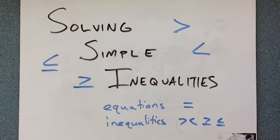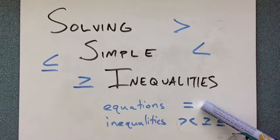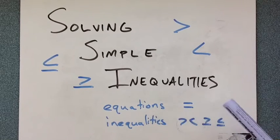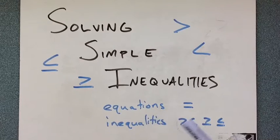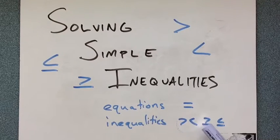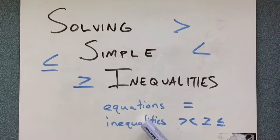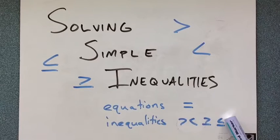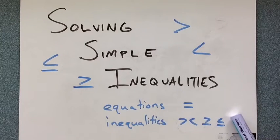First of all, let's look at the difference between equations and inequalities. You've dealt with equations, they use the equal sign. We're having something equals something else. But today we're dealing with inequalities. They use these signs: greater than, less than, greater than or equal to, less than or equal to. So something is greater than something else, or something is less than or equal to something else. Let's begin.